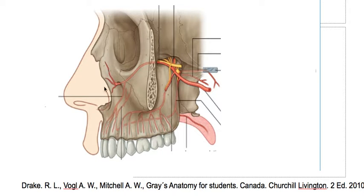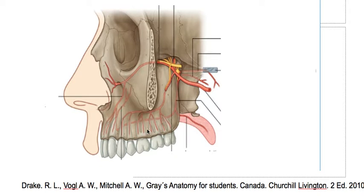Other branches supply the inferior oblique and inferior rectus muscles. Then we have this descending artery, the palatine artery. This is the greater palatine artery, which gives rise to the lesser palatine artery supplying the soft palate, and then the hard palate, passing through the small foramen and the greater foramen respectively.